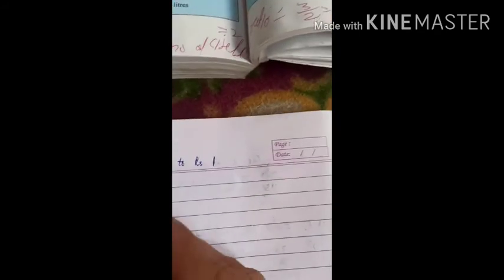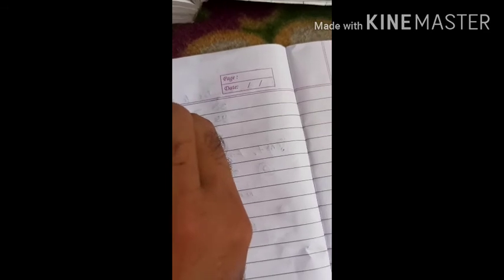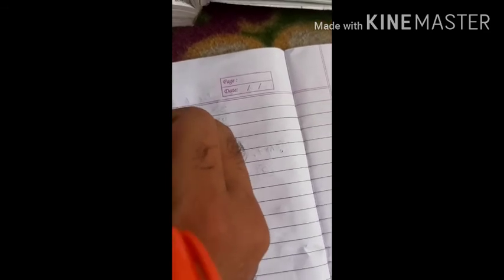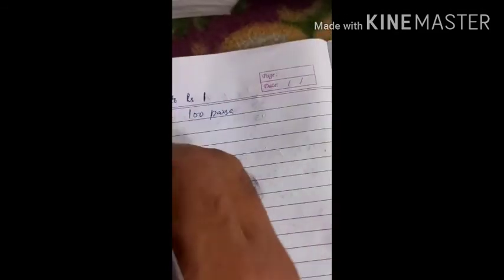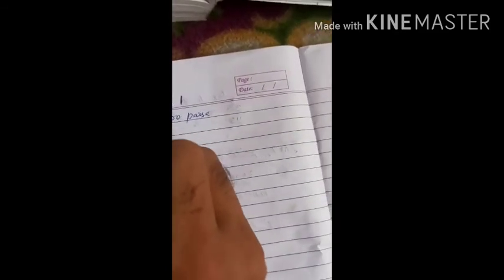Similarly is part number c. Part c is 55 paisa to 1 rupee. This is paisa and this is rupees, so we will convert 1 rupee to paisa. We know 1 rupee is equal to how much paisa? 100 paisa. One rupee contains 100 paisa.